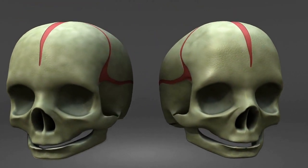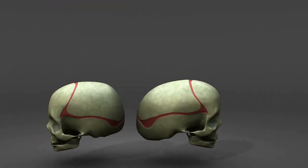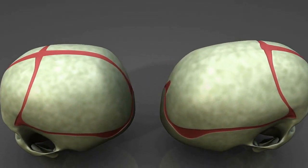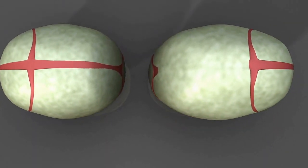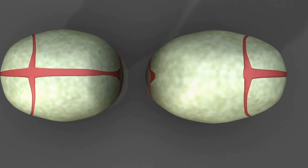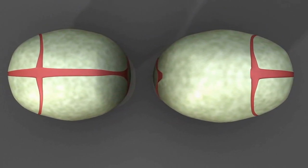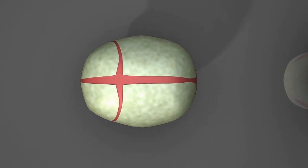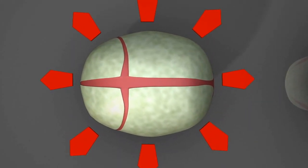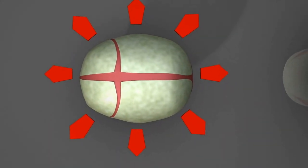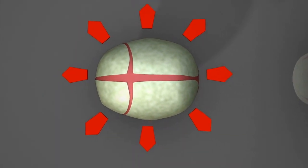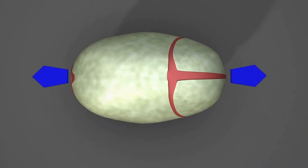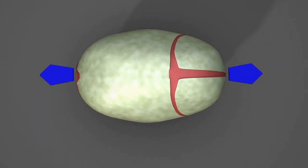To your left is the normal skull compared with the deformed skull to your right. We can see the main suture is missing from the deformed skull. In a normal skull, the suture or space allows the skull to grow in a spherical direction. A missing suture will force the skull to grow in an opposite direction.